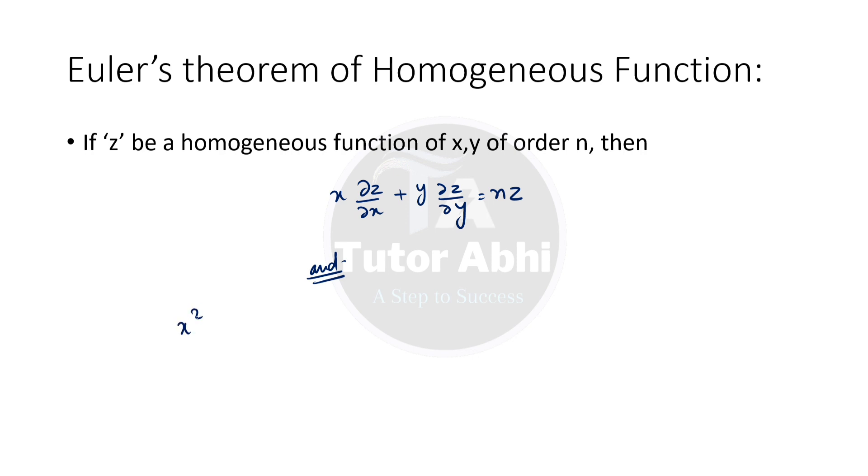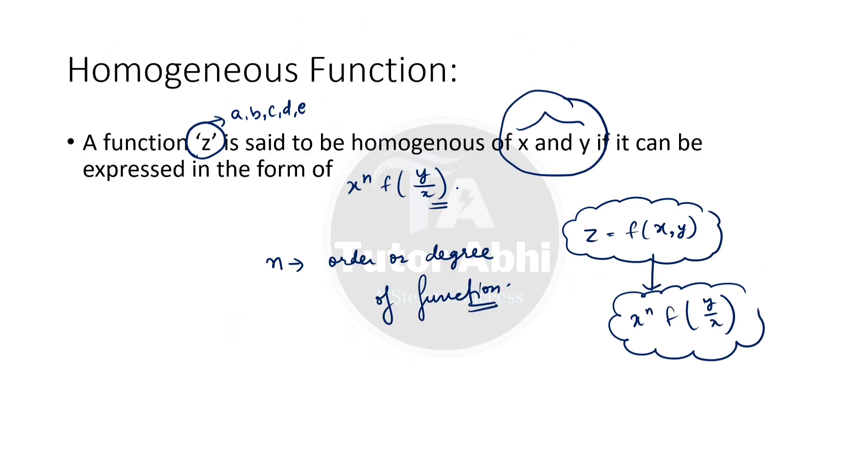One more formula: if z is homogeneous function of x, y of order n, then x square partial square z upon partial x square plus 2xy partial square z upon partial x partial y plus y square partial square z upon partial y square equals n times n minus 1 times z. You can directly remember this formula or see the proof in books.